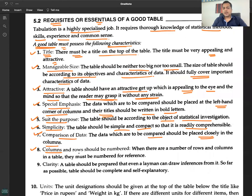Number eight: Columns and rows should be numbered. When there are a number of rows and columns in a table, they must be numbered for reference.